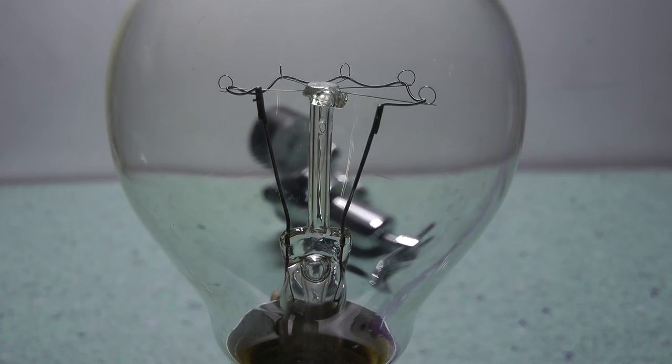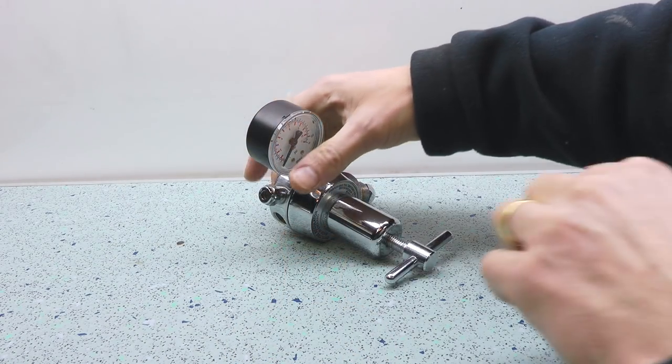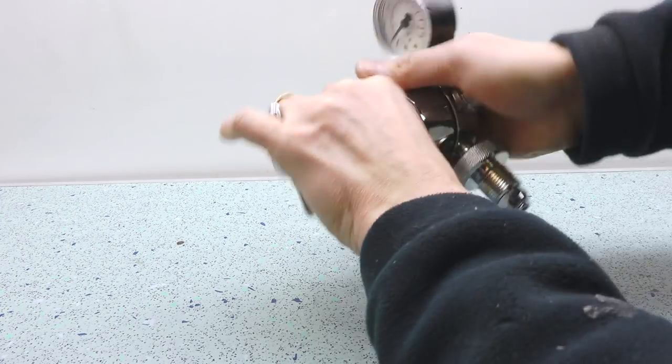I spied an old gas regulator in the scrap bin and it gave me an idea. I reckoned the top half would be a good starting point for that tailstock die holder.